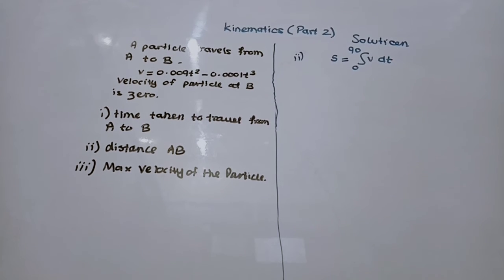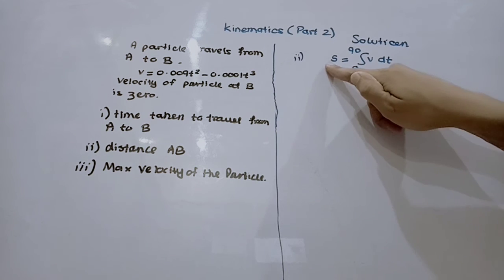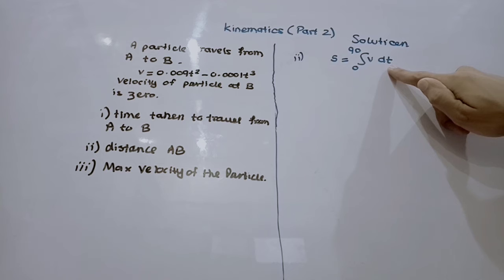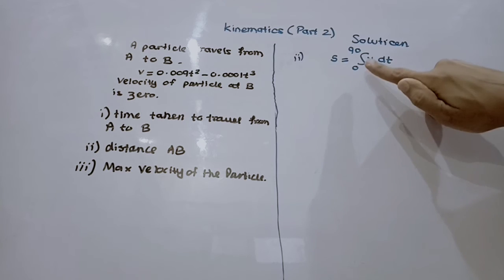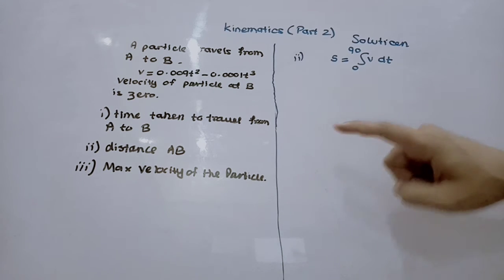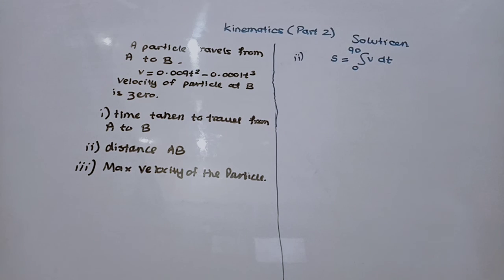Part 2 asks us to find the distance AB. We have already learnt that the integral of velocity gives distance or displacement. So the distance AB is the integral of v dt, with time bounds from 0 to 90, since the travel time from A to B is 90 seconds.